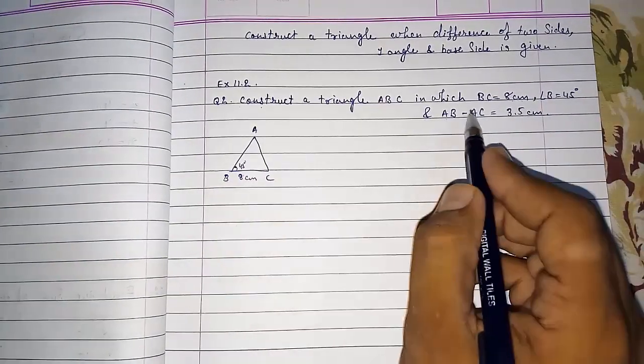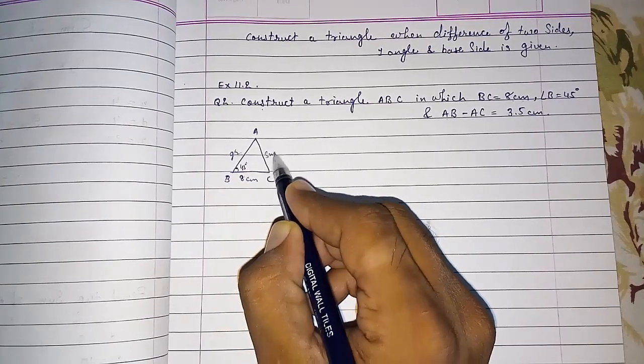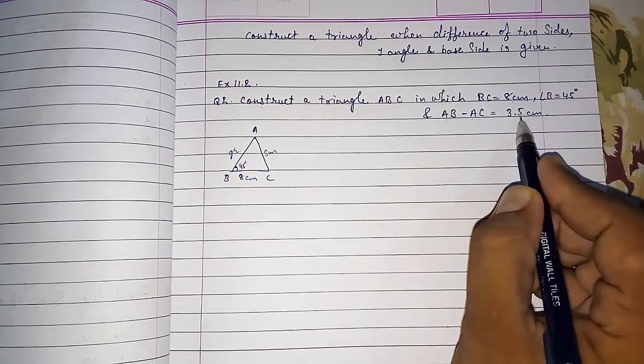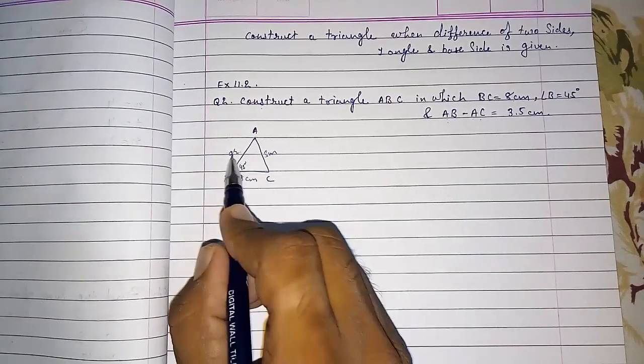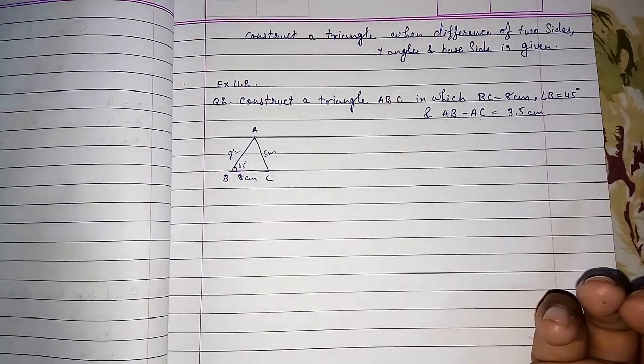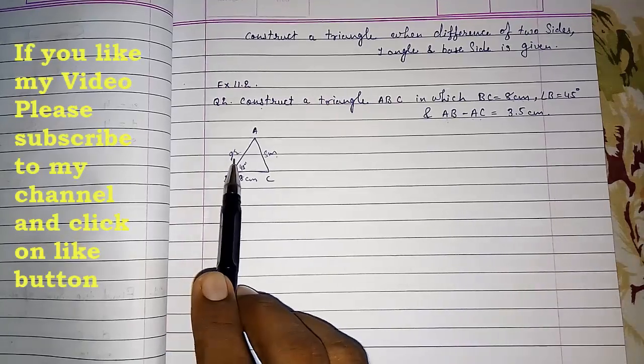So we have to see which side is greater. AB is greater. AB minus AC, so always greater minus smaller is a positive number. I am telling you this because if this side is smaller and this is greater, at that time we have to use another method. In my next video I am going to explain that. Here this side is greater.